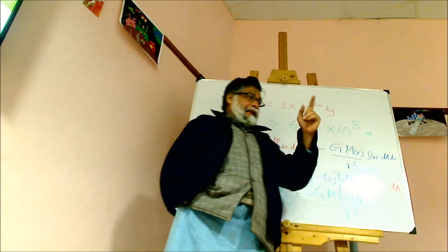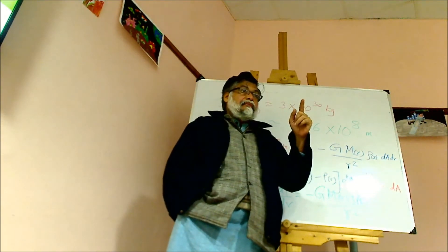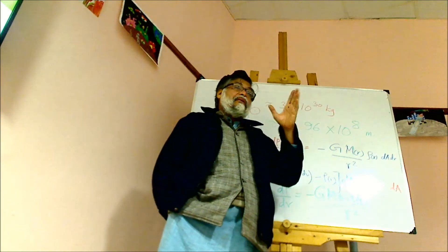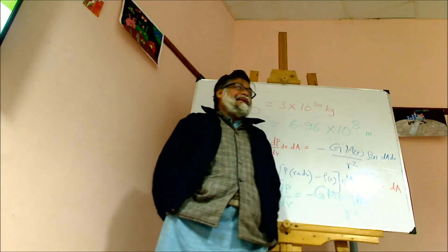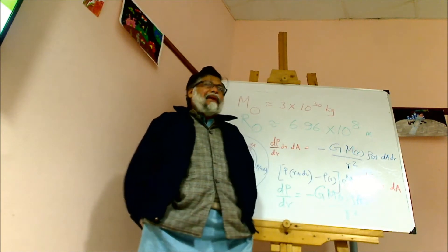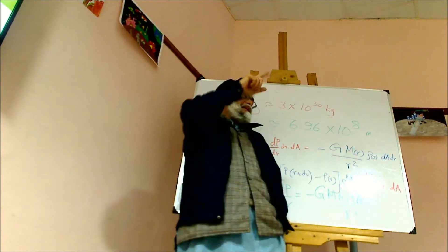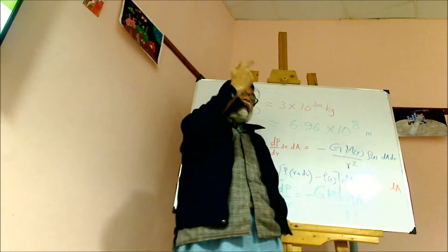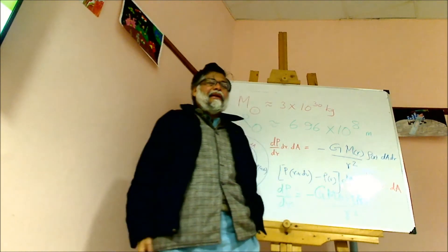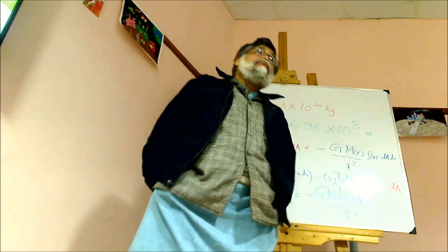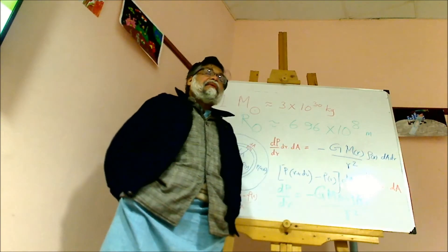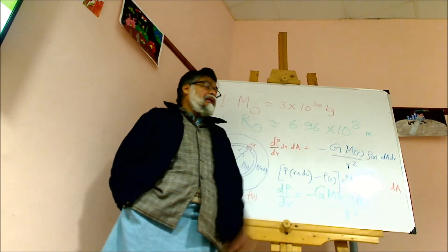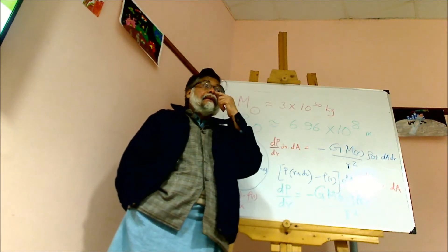Kepler's law tells you that the time period T squared is proportional to R cubed. The proportionality constant gives you the mass of the object. From T² by R³, you can find out the mass. So mass for this star was something like 0.06 solar masses or something. The radius was very small.